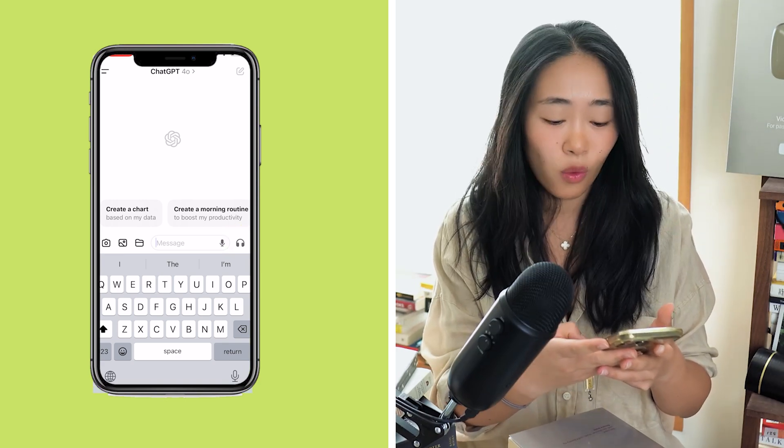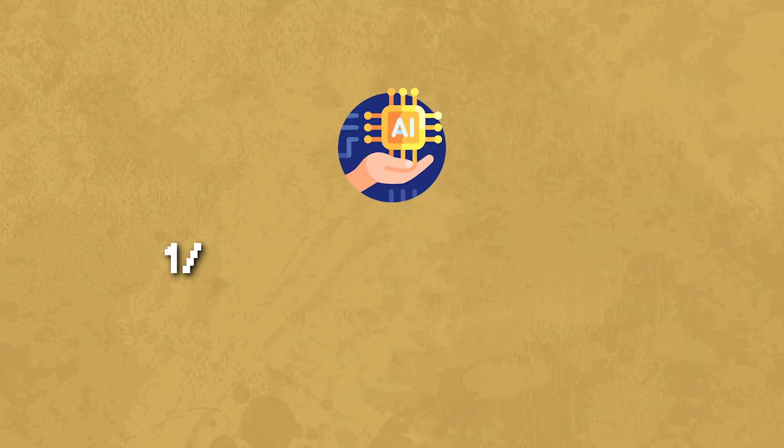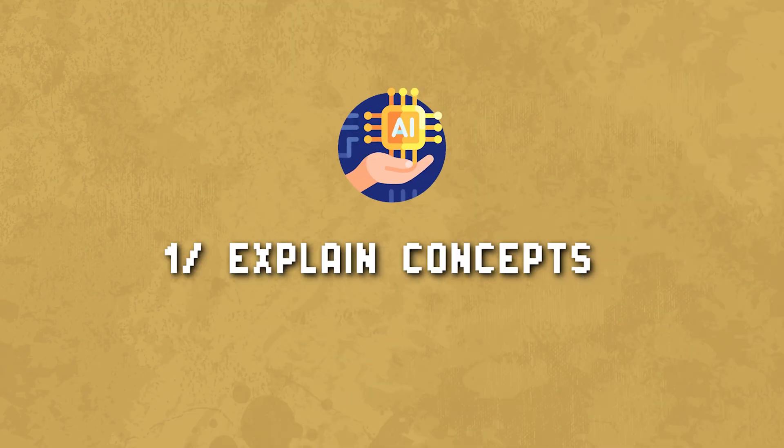The first thing you can use ChatGPT for is if you're reading something with a concept you don't understand — get ChatGPT to answer it. That's pretty simple. Let's take Gödel, Escher, Bach as an example. This is a book I've started; I thought I would finish it by now, but there are a lot of concepts in here that I don't know, or my understanding is very superficial. So I've been going to ChatGPT a lot.